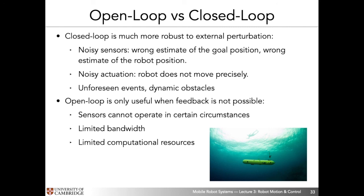To finish, closed loop control is clearly the more robust option, being robust to external perturbations. Even if sensors are noisy and goal position estimates are imperfect, closed loop control continuously corrects toward the desired state.